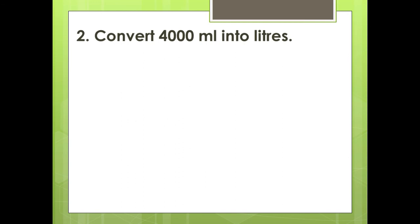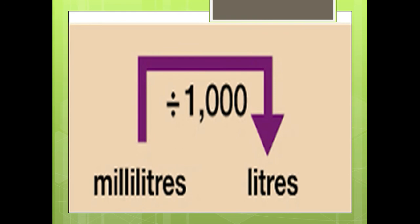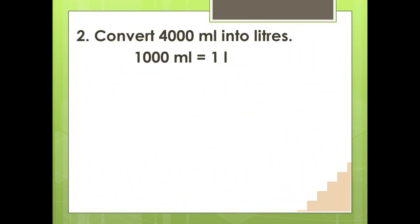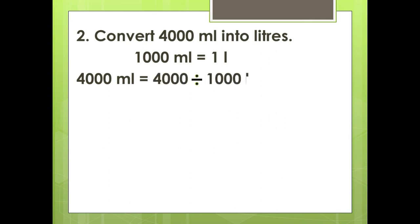Convert 4000 milliliters into liters. Here, we have to convert milliliters to liters, so we divide by 1000. Since 1000 milliliters equals 1 liter, we write 4000 milliliters divided by 1000, which gives 4 liters. So, if we convert 4000 milliliters into liters, the answer is 4 liters.